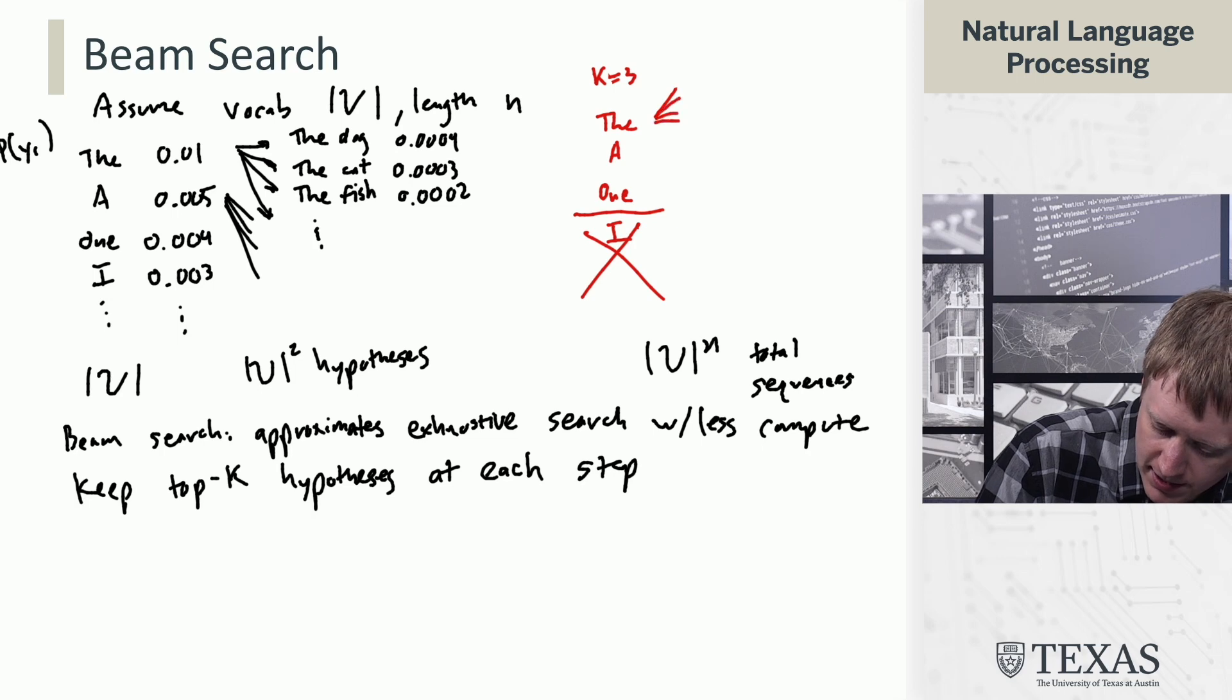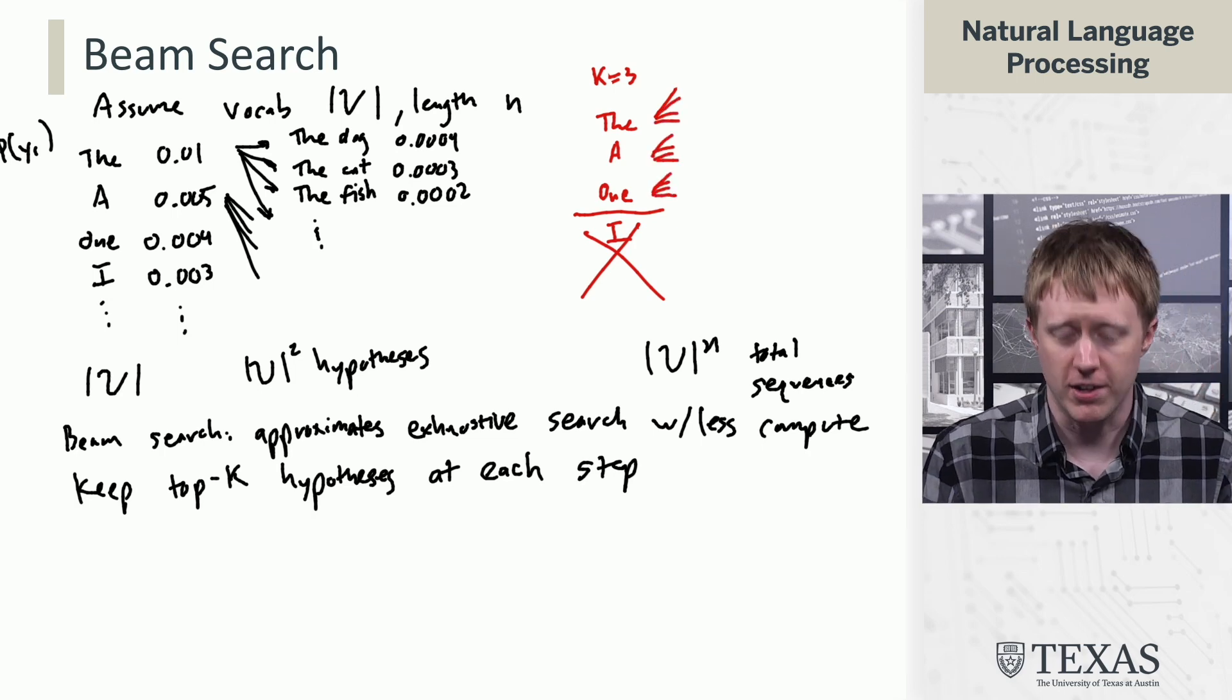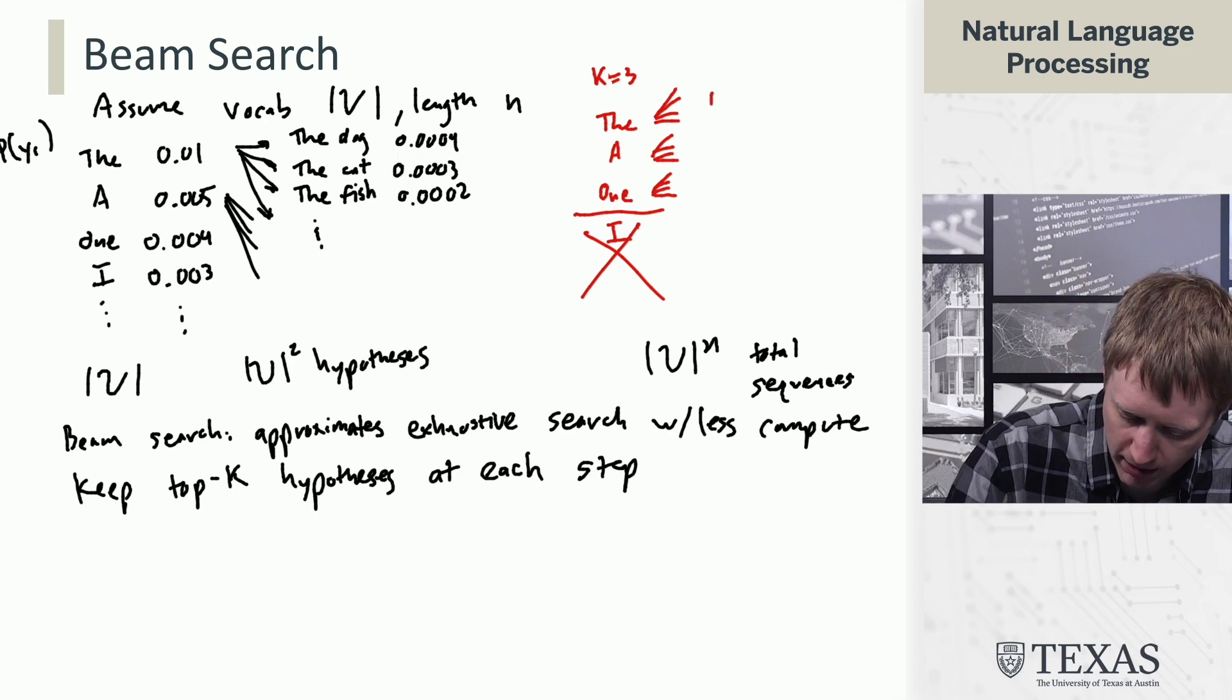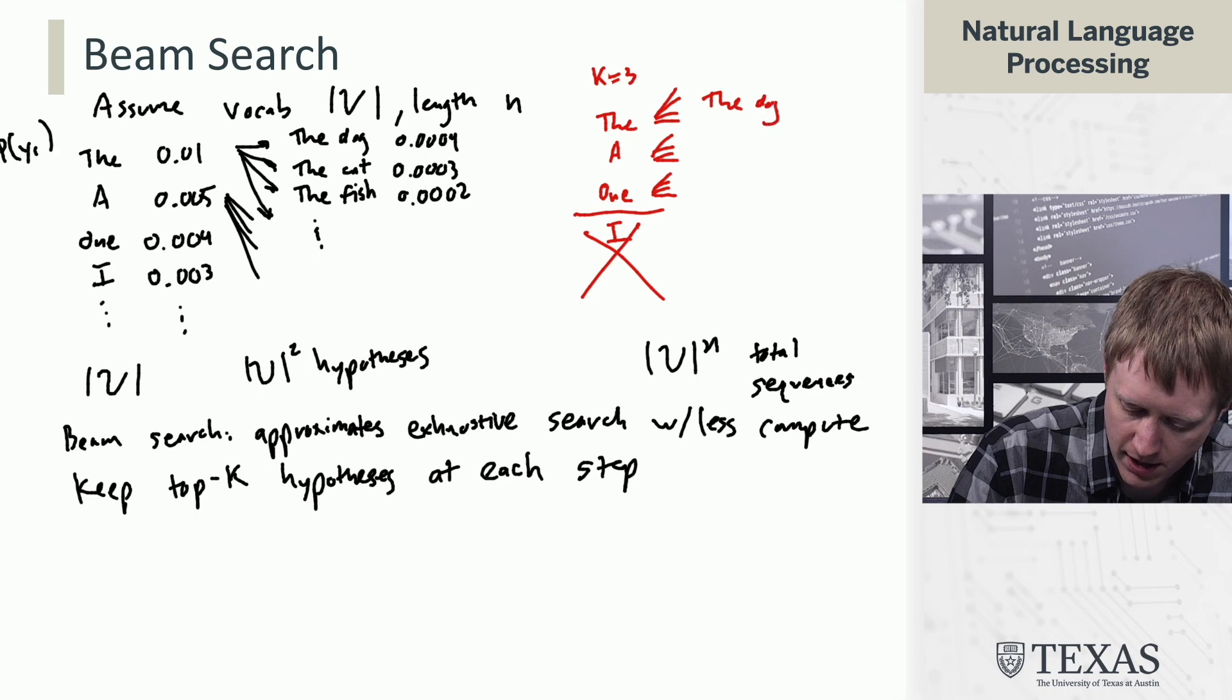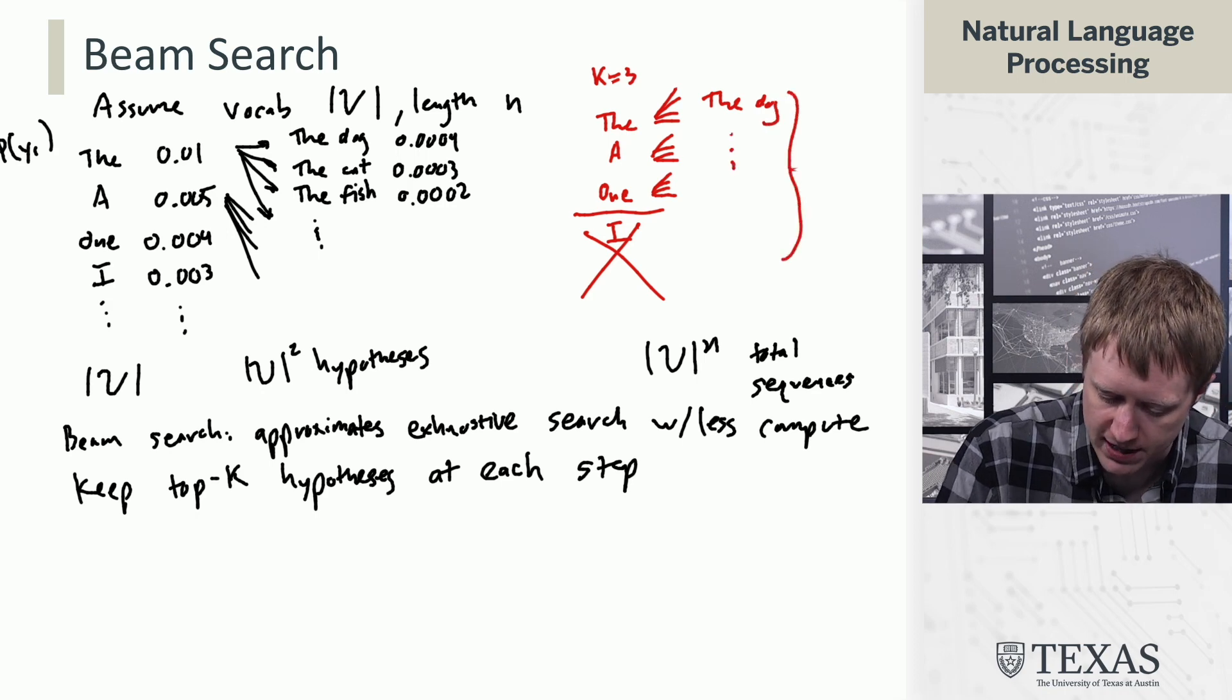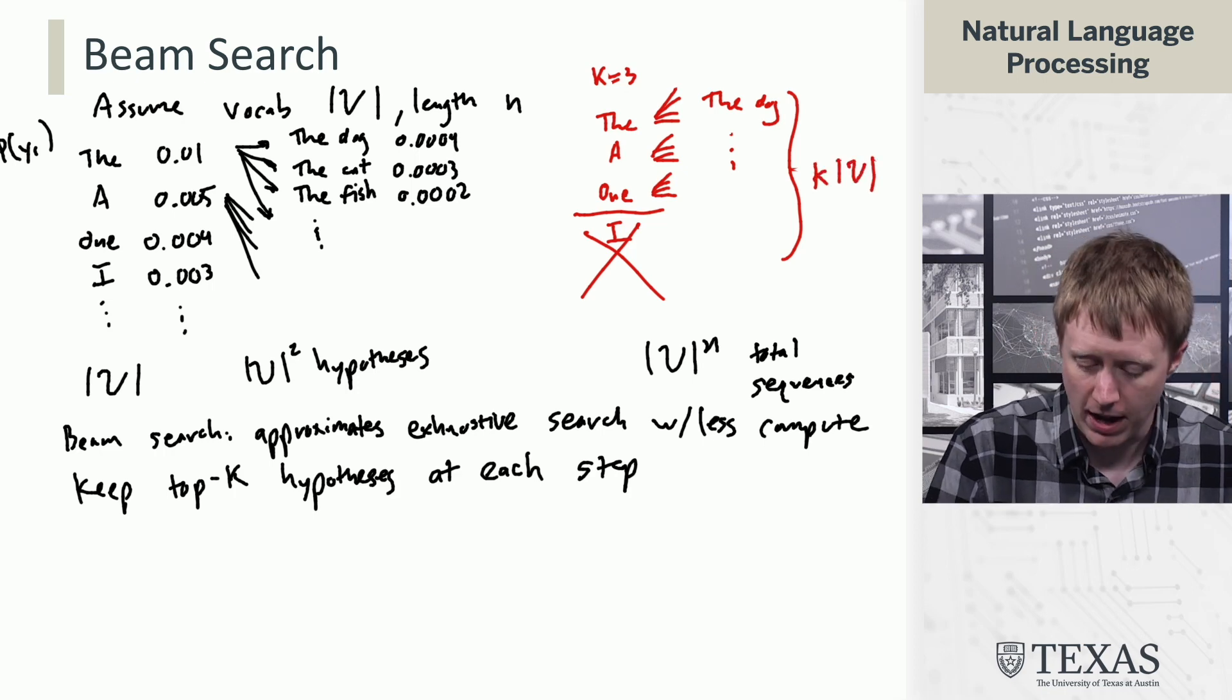Each of these still generates a whole bunch of possible next words, right? So we get the dog, you know, all these things, and we generally end up with k times v of these.